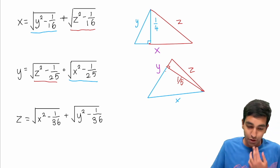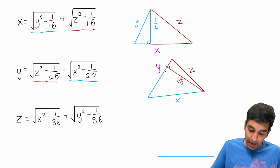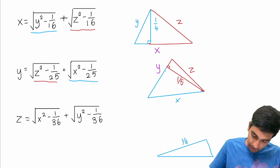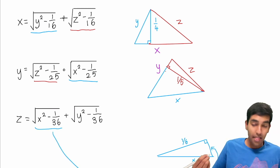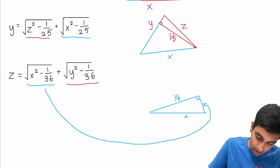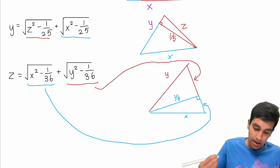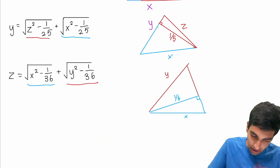Final one: z equals the square root of x squared minus 1 over 36. We have x as the hypotenuse and an altitude of length 1 over 6 here. This quantity is precisely the square root of x squared minus 1 over 36. And then we have the square root of y squared minus 1 over 36, which we represent similarly. Together they form z.